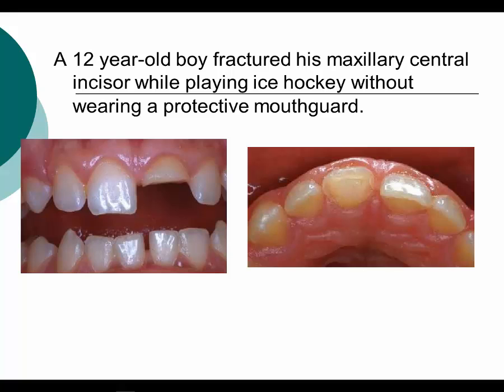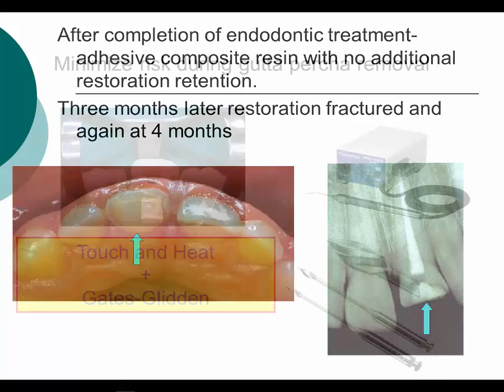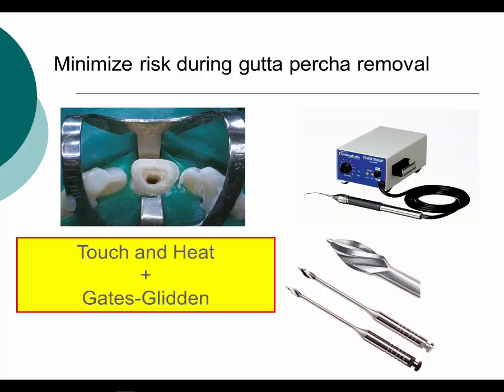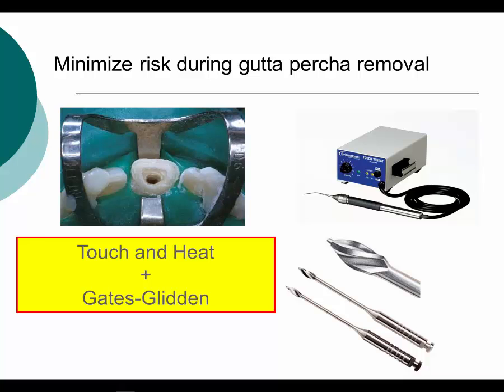Let's look at a case: a 12-year-old boy who fractured his maxillary central incisor playing ice hockey without a protective mouth guard. This tooth had been restored several times with nothing retaining the composite other than the tooth structure itself, and it kept fracturing due to the same behaviors. Our decision was to place a fiber post. We minimize risk when removing the gutta-percha using a Touch 'n Heat from Sybron Care or a Gates Glidden. We don't want to over-instrument the canal — the root canal is already adequately instrumented and we have enough dentin support. We're going to let the post size be dependent upon the gutta-percha rather than making the post fit.